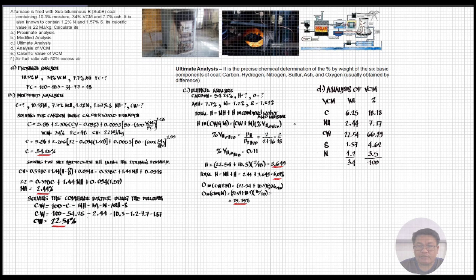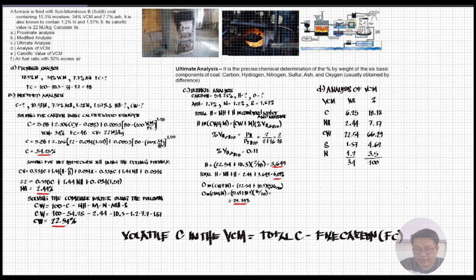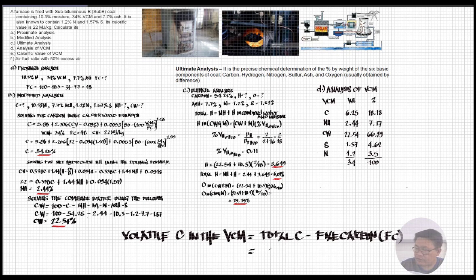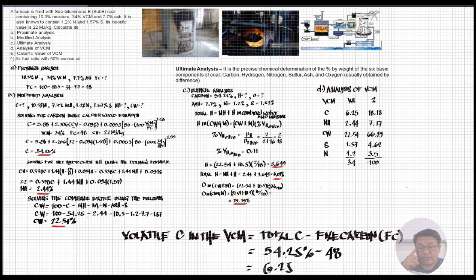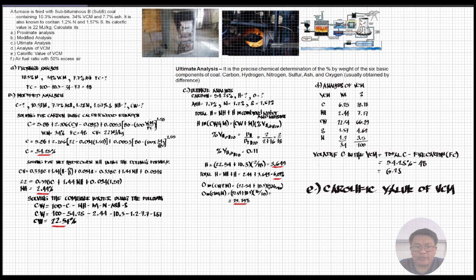The volatile carbon in the BCM is the part of the BCM that is easily evaporated or converted to gas. To get that, we compute total carbon minus fixed carbon. Carbon is already given — we have the value of 54.25, then minus 48, giving us 6.25 for the volatile carbon, which is 6.35 percent of the BCM.